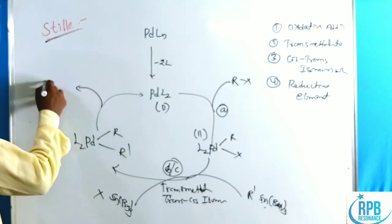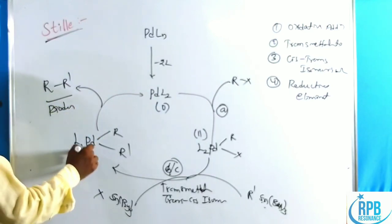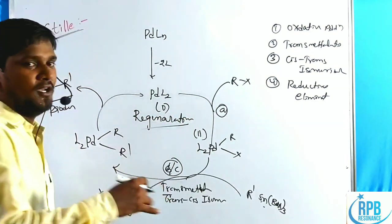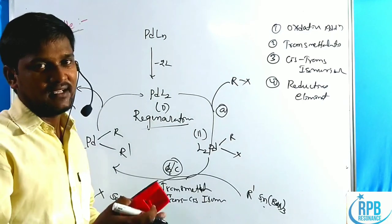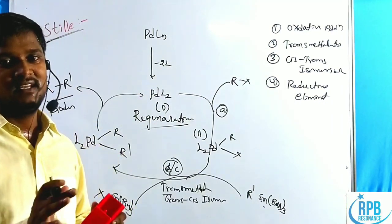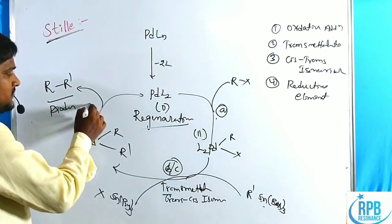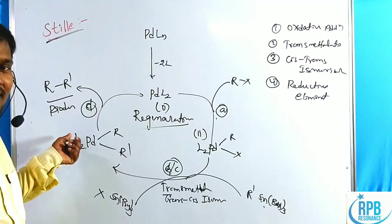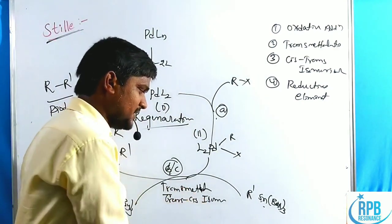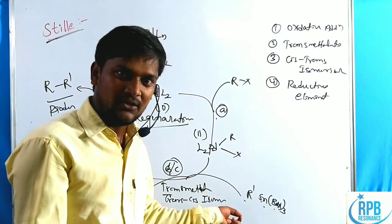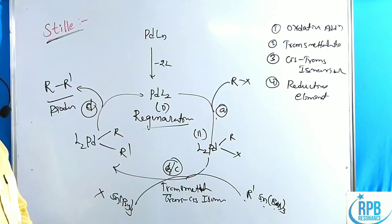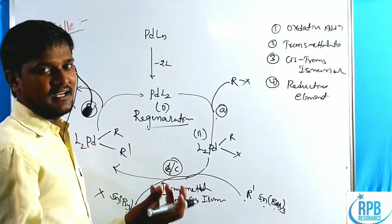Finally, in step D, reductive elimination occurs — the R and R' groups are eliminated to give the R-R' major product. The catalyst is regenerated for use in many more catalytic cycles. Reductive elimination involves a decrease of two units in oxidation state and two units in coordination number. In transmetalation, several groups may be present on the tin; the selectivity of which group transfers is important.